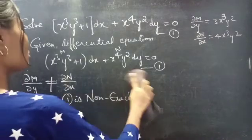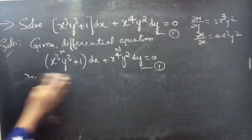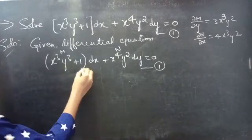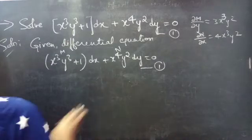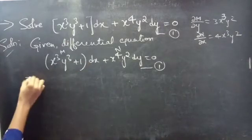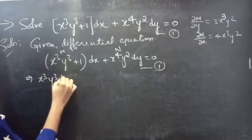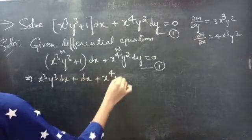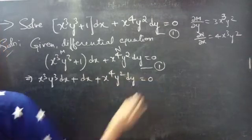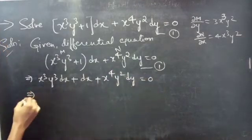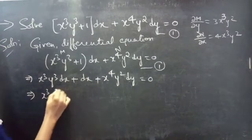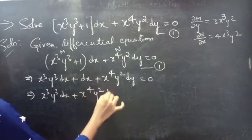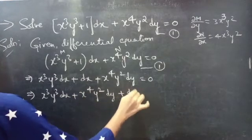Now we will reduce the given differential equation — that is, the non-exact equation — to an exact equation using the inspection method. We can read the equation as x-cubed y-cubed dx plus dx plus x to the power 4 y-squared dy equals 0, which gives x-cubed y-cubed dx plus x to the power 4 y-squared dy plus dx equals 0.